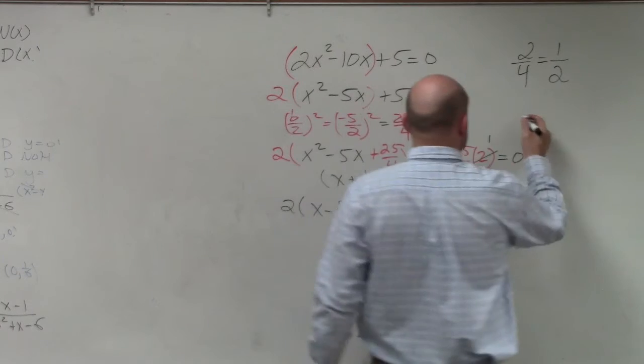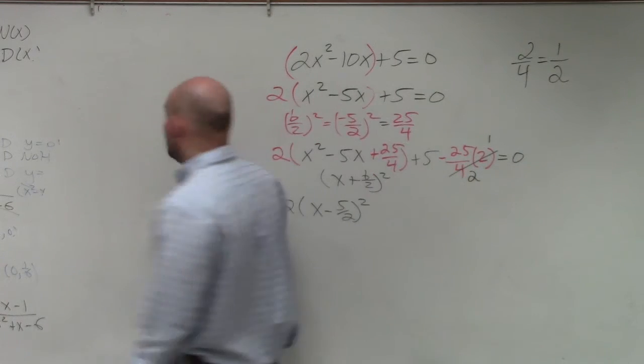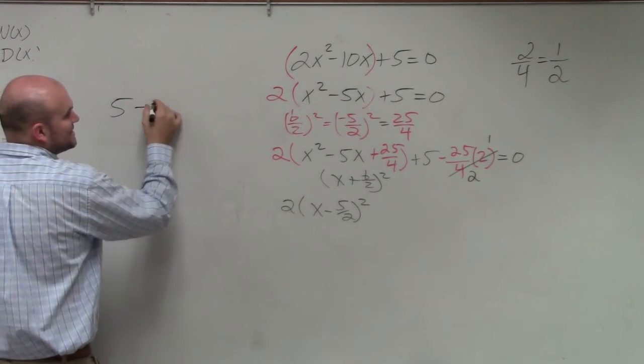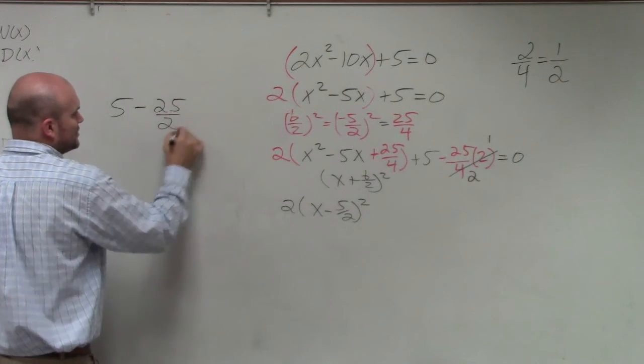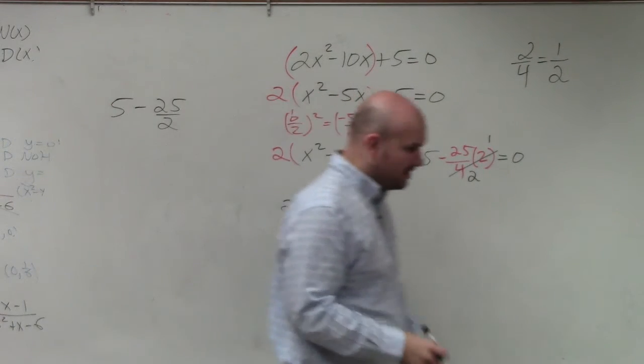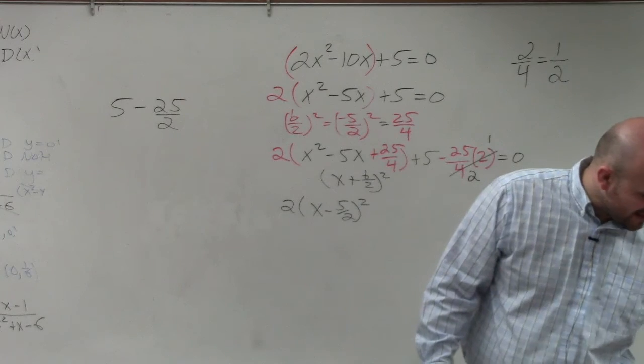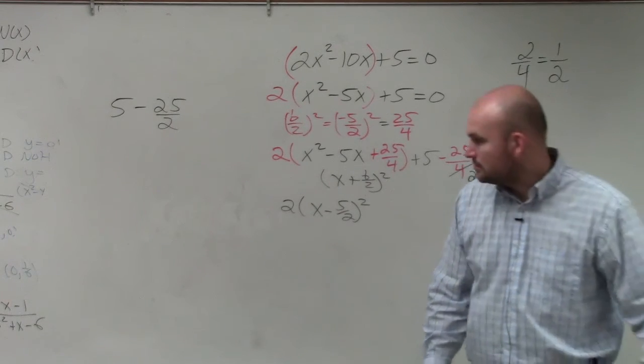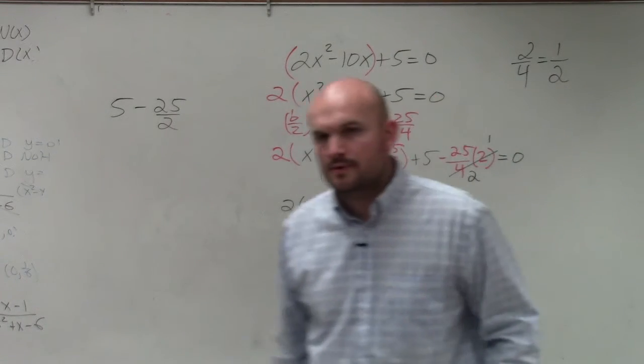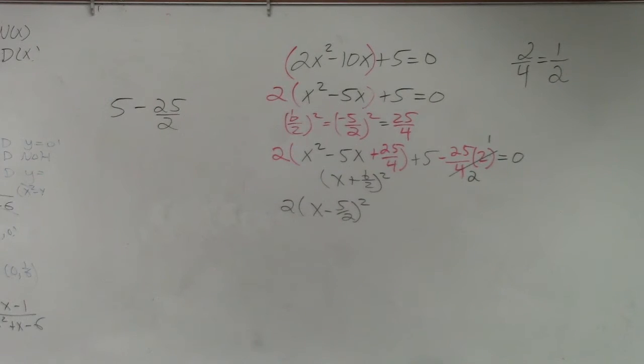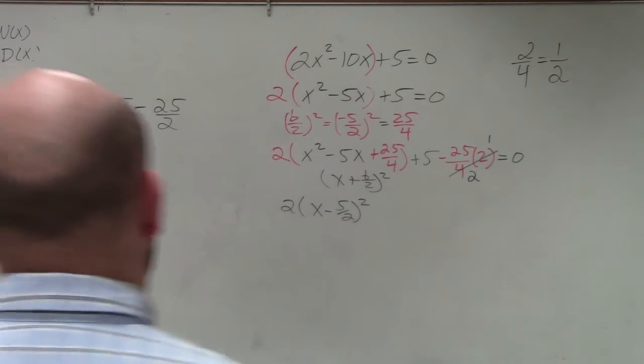How am I going to do, I have a space over here. How am I going to do 5 minus 25 over 2? Now, I'm multiplying a whole number, subtracting a fraction from a whole number. Well, to subtract fractions, if you guys remember, you've got to have common denominators.